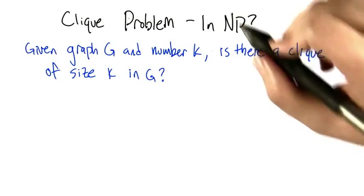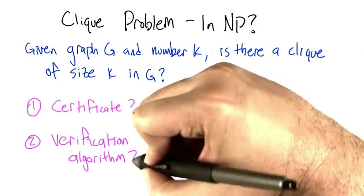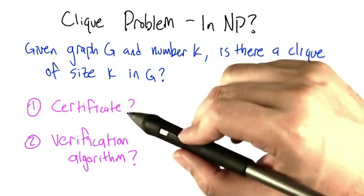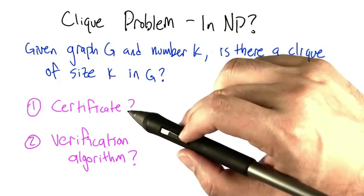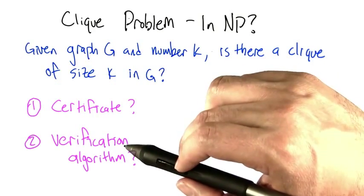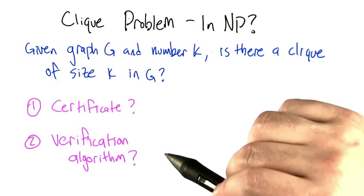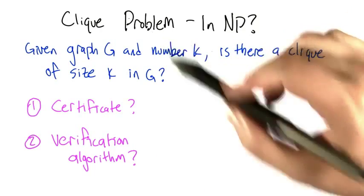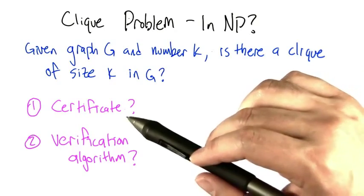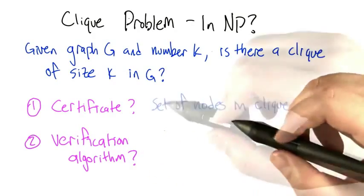Is this decision problem in the set NP? Remember that we need to show two things for it to be in NP: it needs to have a short accepting certificate, and it needs to have a fast verification algorithm. In particular, what we don't need to do is actually have a solution to this problem that's fast. We just need to show that a certificate verification algorithm is fast.